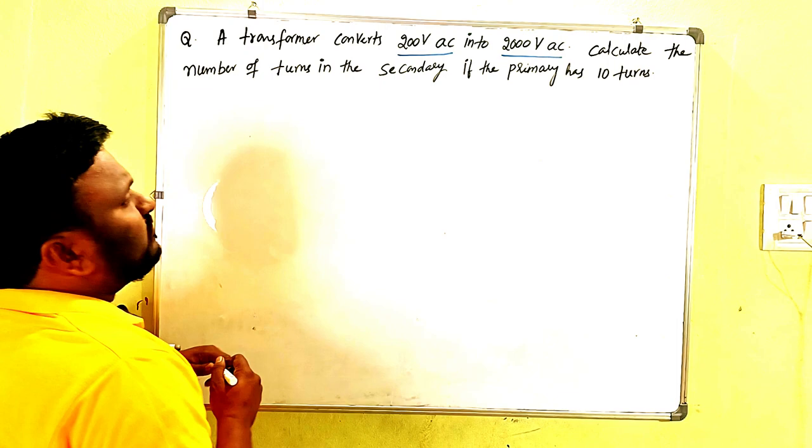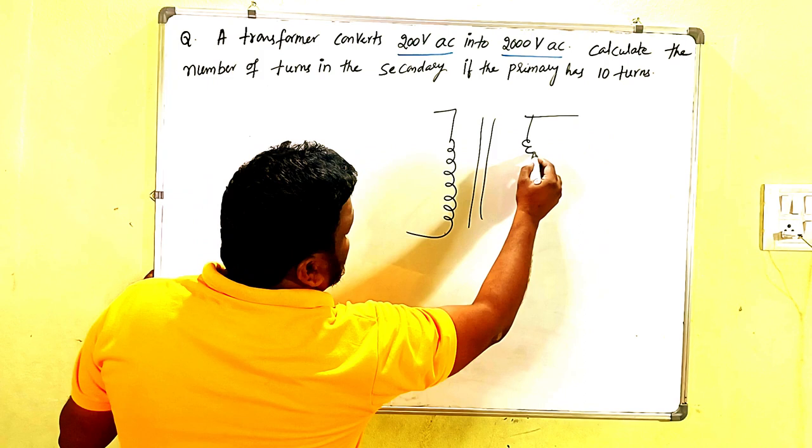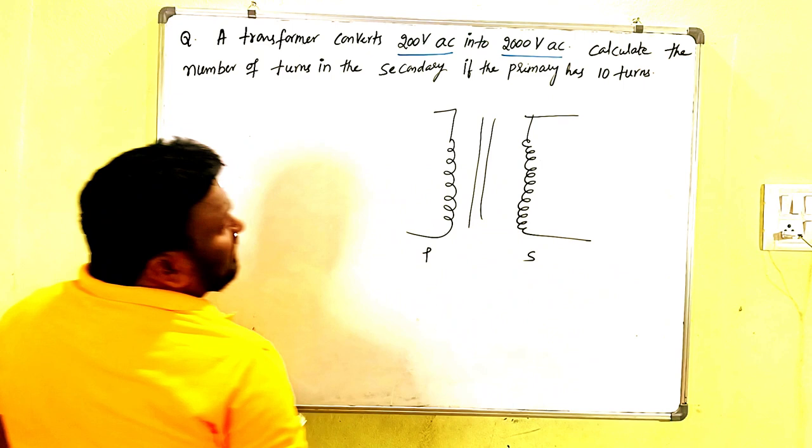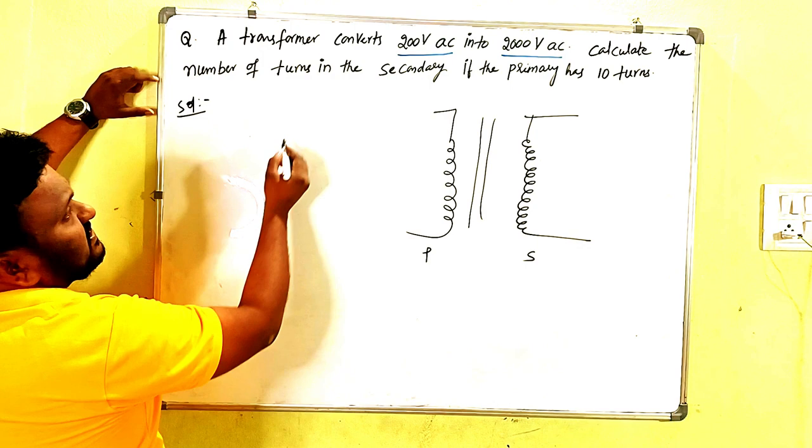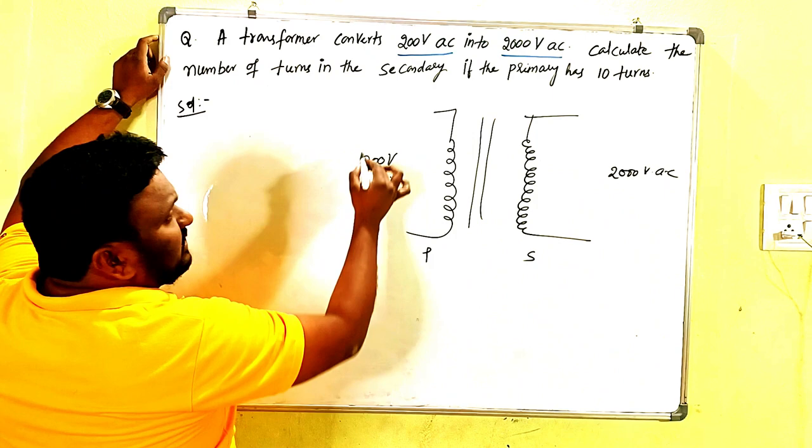So what is given? It is a transformer, and this is the symbol I am showing here. This is the primary coil and this is the secondary coil. And what is the work? It can change 200 volts AC to 2000 volts AC. It means that this is the input and this is the output here.